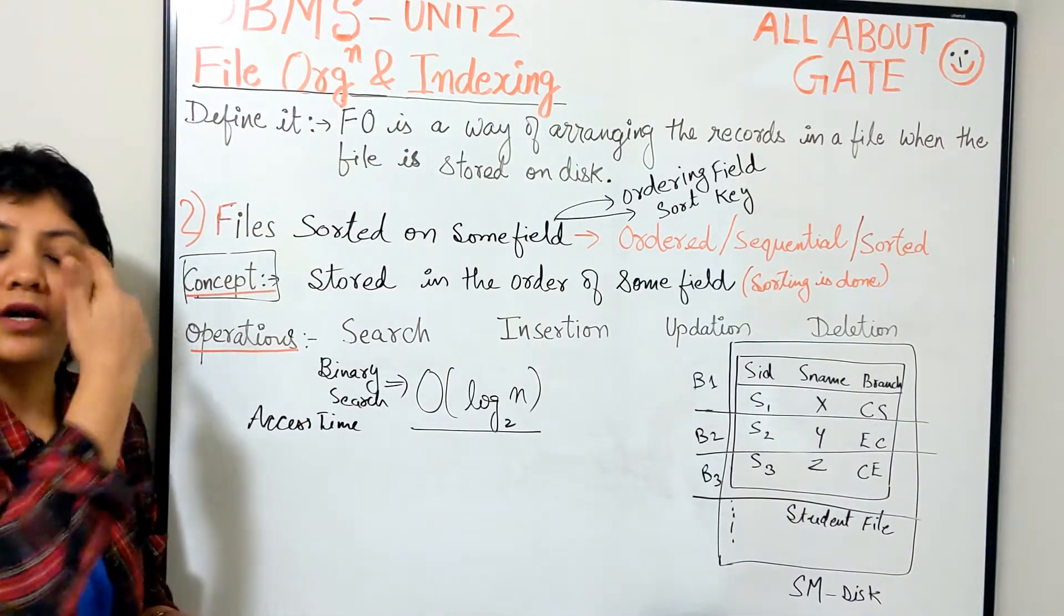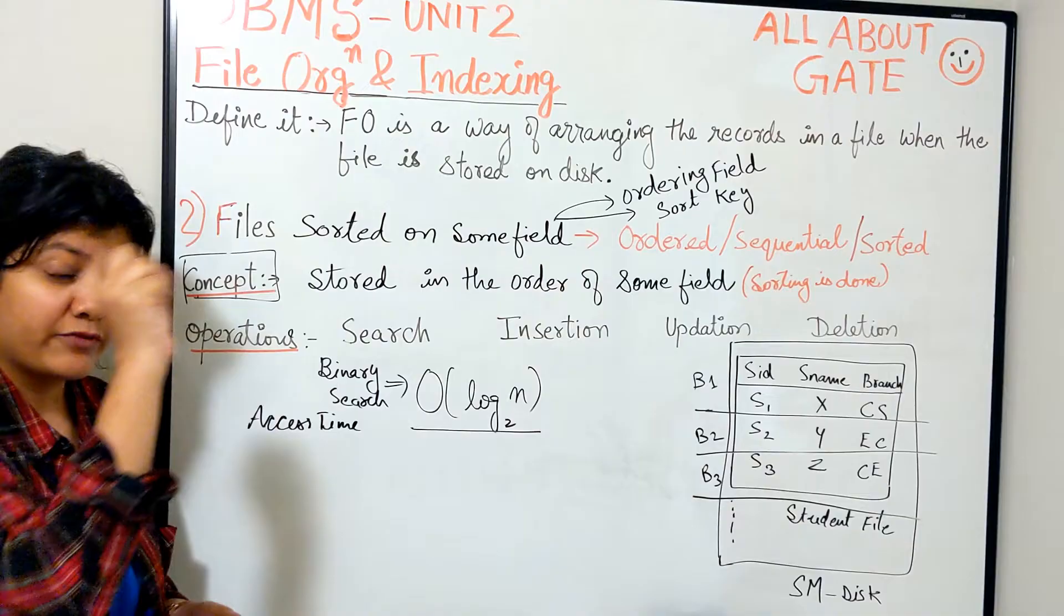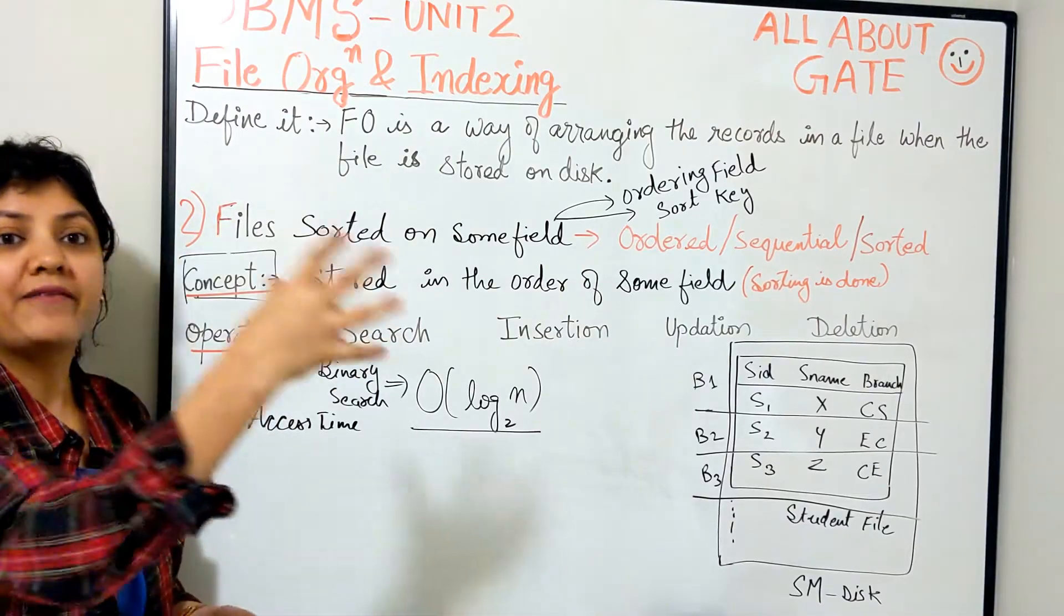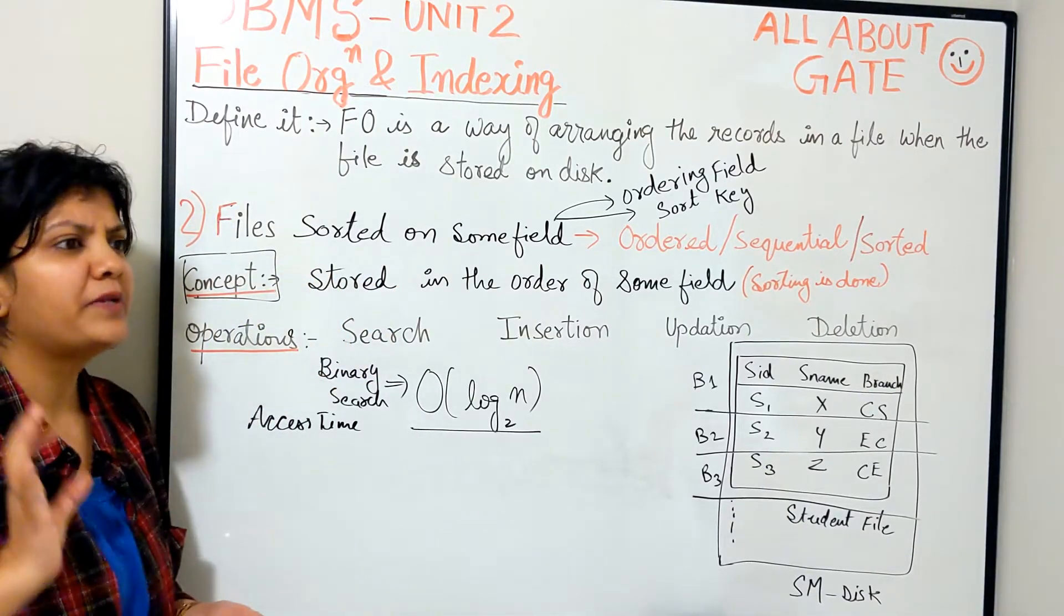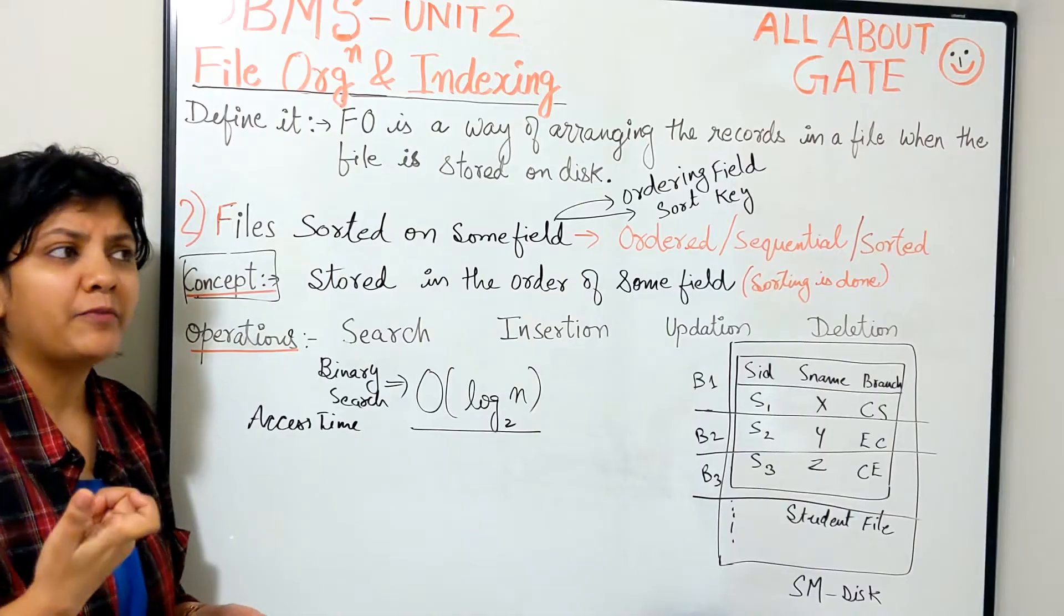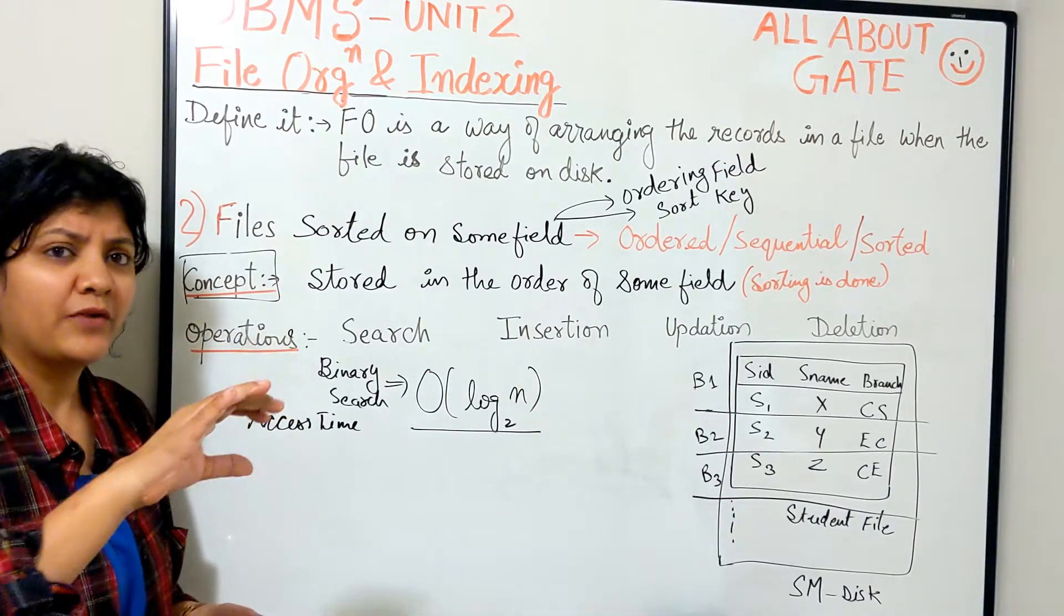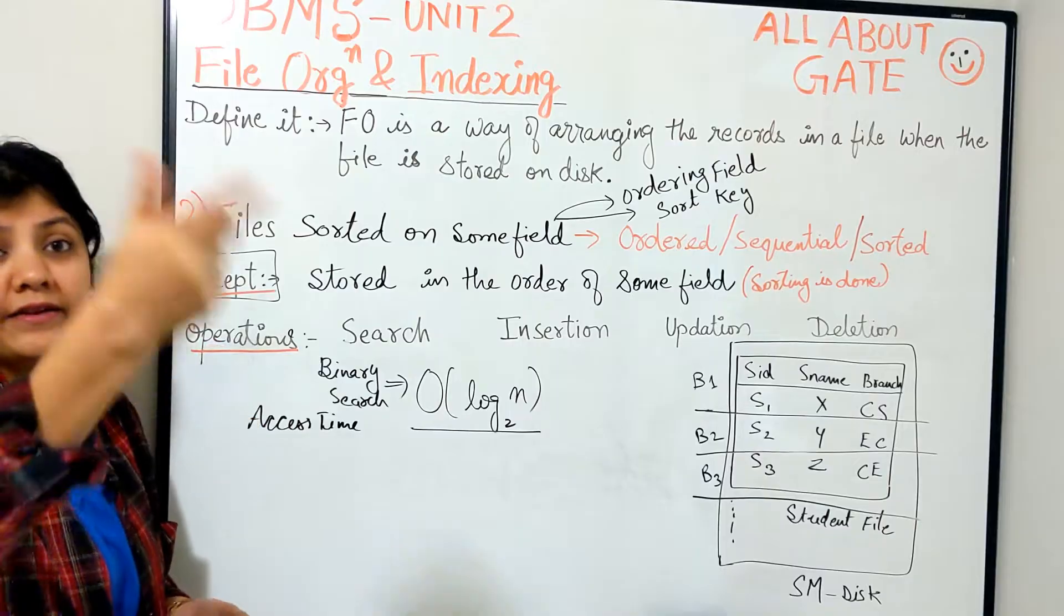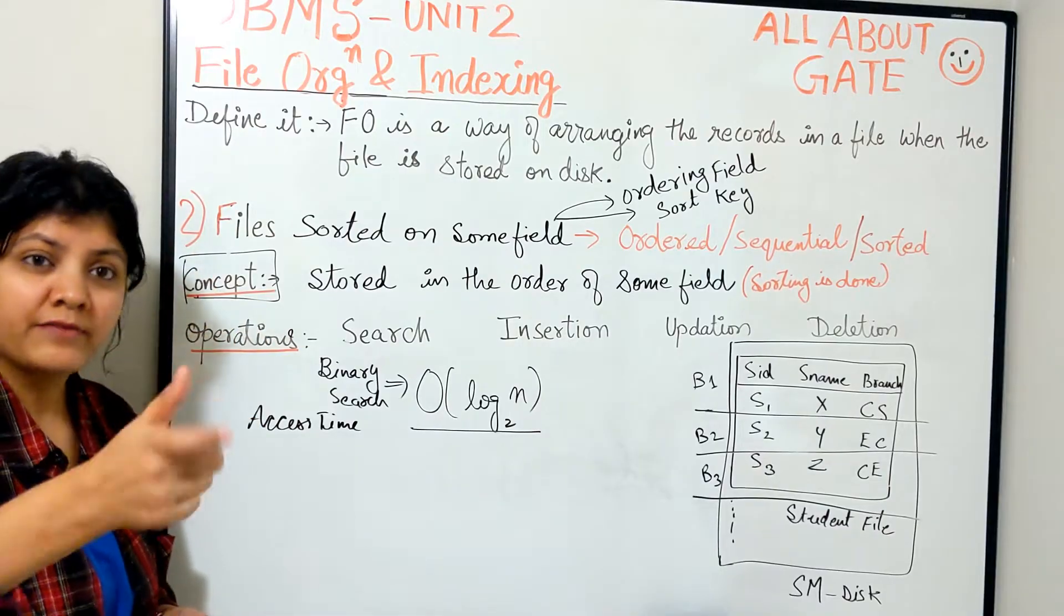Because for updating something or for deleting some record, first of all we need to retrieve it, we have to locate or search it. So whatever time would be taken up for the search will be the maximum time. Of course some time will be required for deleting it manually and rewriting and then updating it and rewriting.